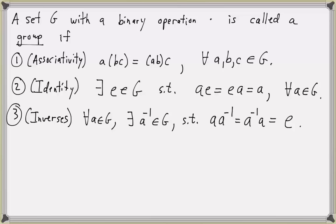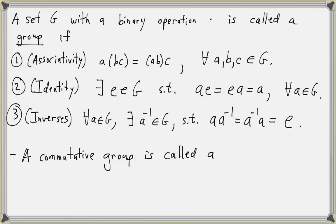Some special types of groups that are commutative are called abelian groups. A commutative group is called abelian, meaning that XY equals YX for any X and Y in the group.